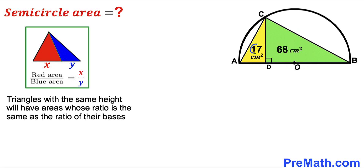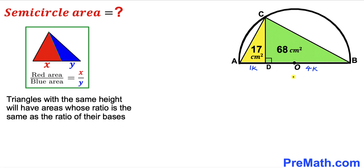The area of the yellow triangle is 17 and the area of the green triangle is 68, so their ratio is 1 to 4. Therefore their bases have the same ratio: AD = 1k and DB = 4k for some constant k. Our task is now to find the value of k.